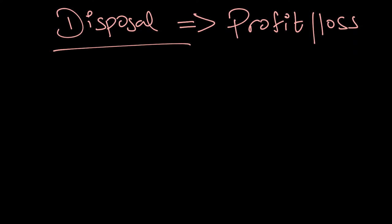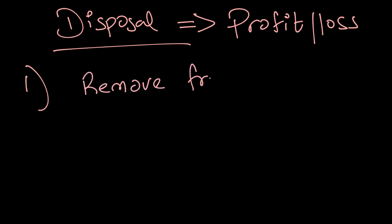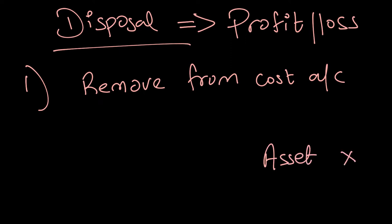I'll first go through the double entry for recording disposal and then I'll draw the account. The first step is we have to remove this asset, so we have to remove it from the cost account. The simple double entry is I will credit my asset account to remove it, and I will transfer this to the disposal account by debiting the disposal account. Remember it's a temporary account just created to calculate the profit or loss.